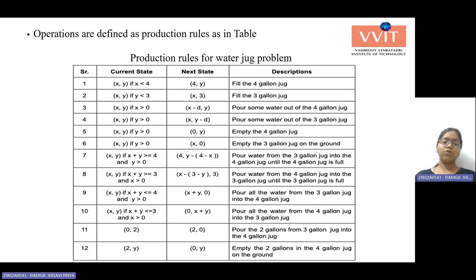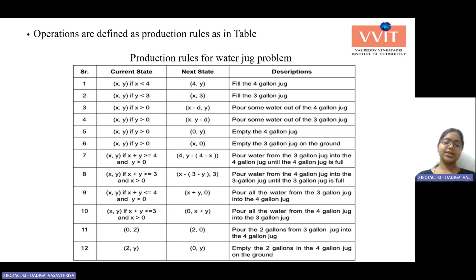We have poured the water — that is 3 minus y — from the 4-liter jug into the 3-liter jug until the 3-liter jug is full, that is 3. And when both the amount of water in both jugs is less than or equal to 4 and there is some water in the 3-liter jug, we need to pour all the water from the 3-gallon jug into the 4-gallon jug. That means x plus y comma 0 — the 3-liter jug is empty and all the water has been poured into the 4-liter jug.